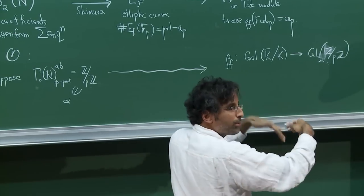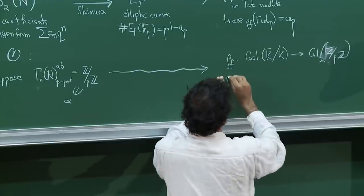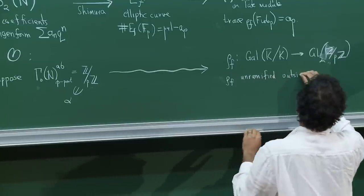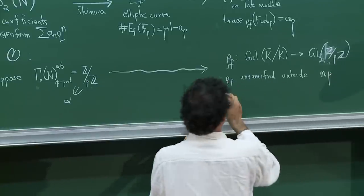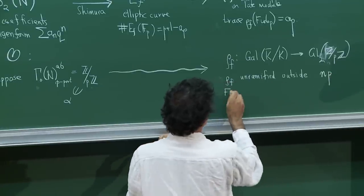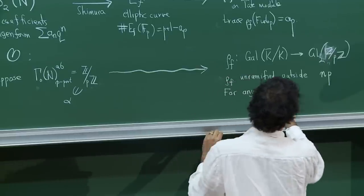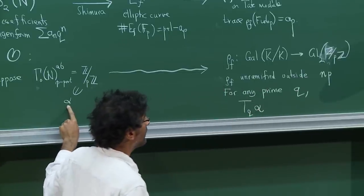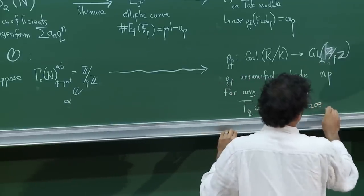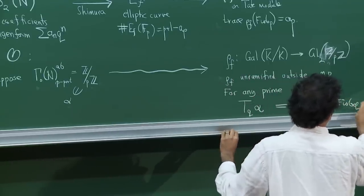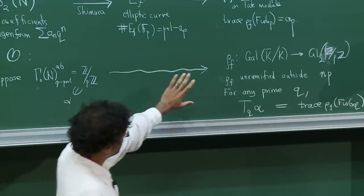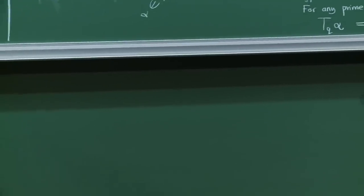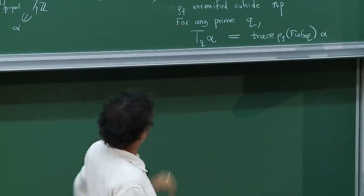This representation has two important properties: first, it is unramified outside N times p; and second, for any prime q, the way that the q-Hecke operator acts on alpha is by multiplication by the trace of the Frobenius of q.